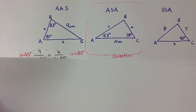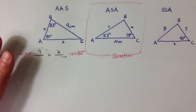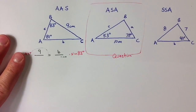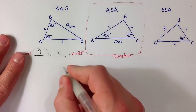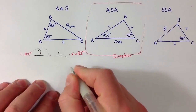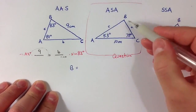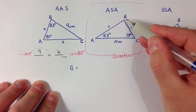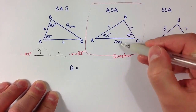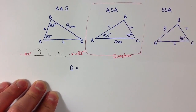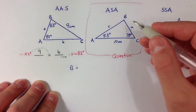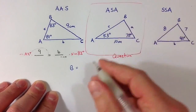I hope you took a few minutes to work on this question, the angle-side-angle problem. Let's take a look at what the answer should be. We want to start by finding the measure of angle B, because that's the angle that's opposite the given side length. Before we can use the law of sines, I need to figure out what that angle measure is.